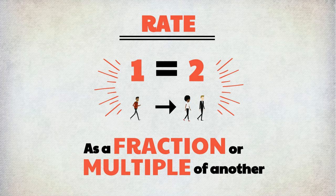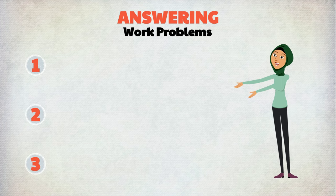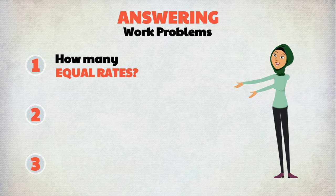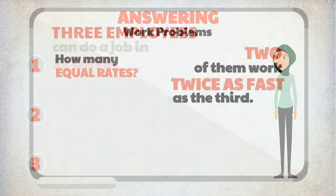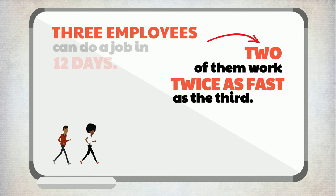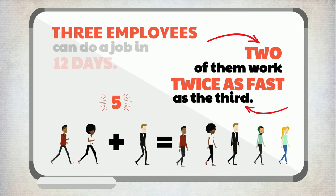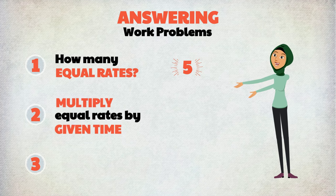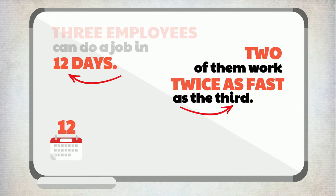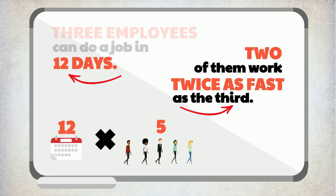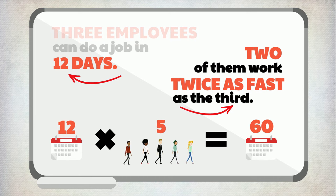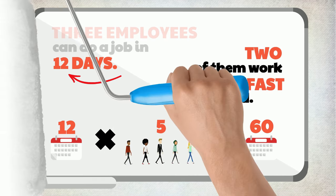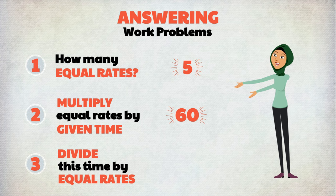In some problems, the rates, even if they are unequal, can be equalized by comparison. In these problems, you'll need to represent one rate as a fraction or multiple of another. To find the answer, follow these three steps. Step one: determine from the facts how many equal rates there are. In this case, there are two fast workers and one slow worker, so there are actually five slow workers at equal rates. Step two: multiply the number of equal rates by the given time, so one slow worker will take 12 days — 12 times 5, five being the number of slow workers, equals 60 days to complete the job.